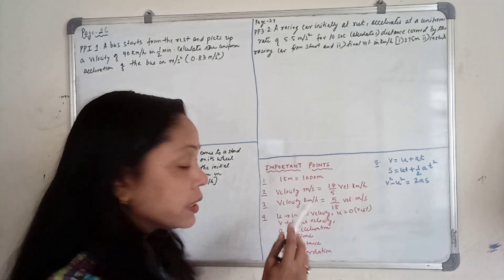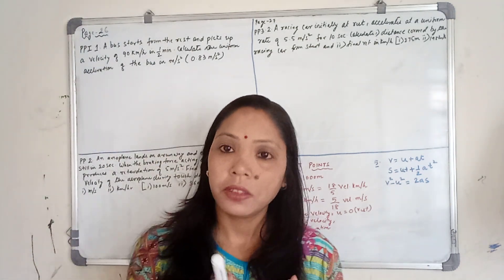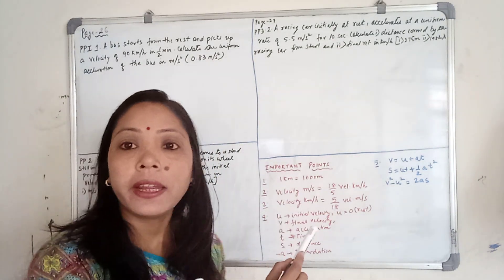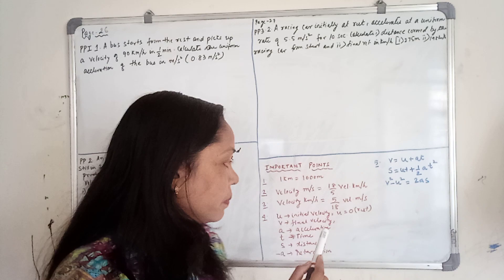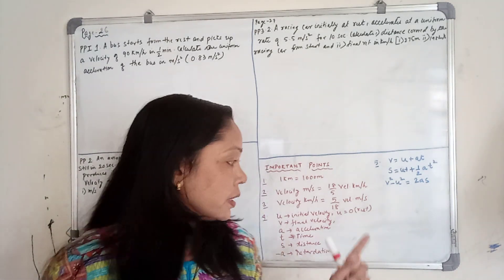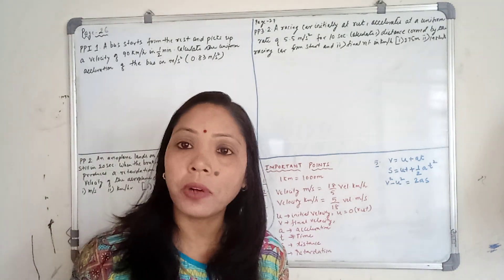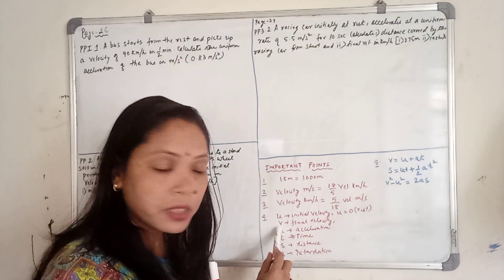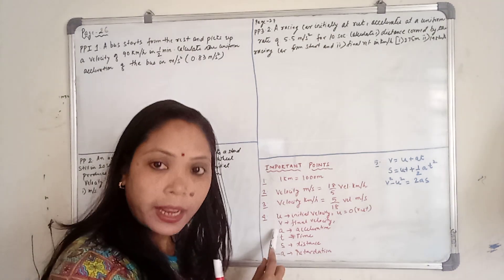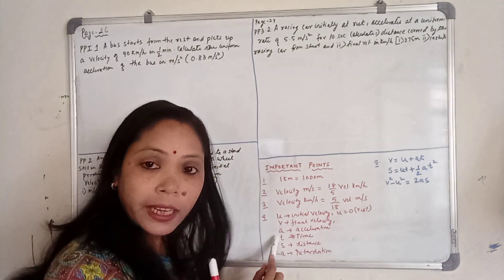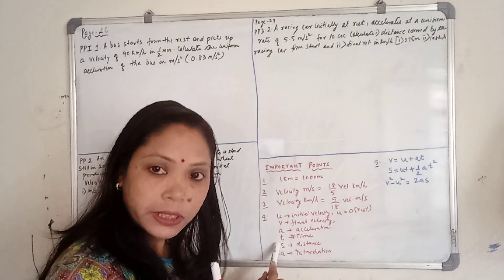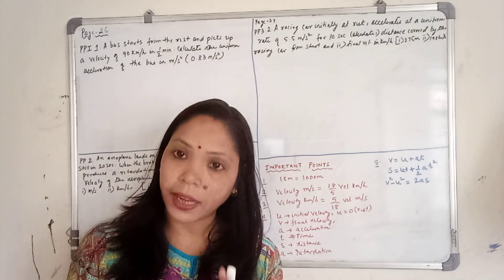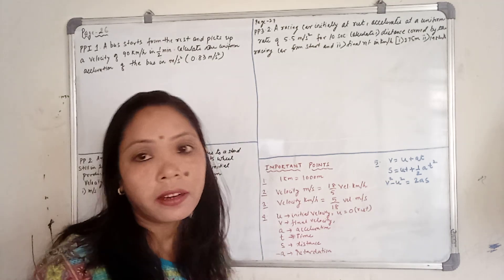Now some symbols we need to solve the numericals: U is always used for initial velocity, and if the body is at rest, then U equals zero. V is the final velocity. A is acceleration. T is time. S is distance. And negative A is retardation.